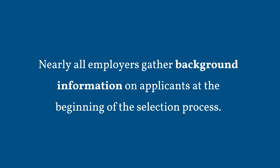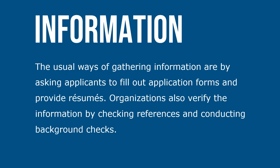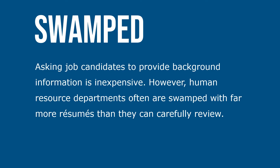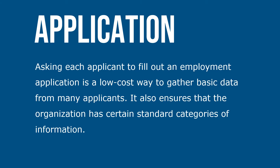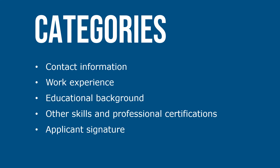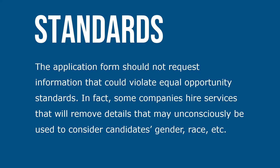Nearly all employers gather background information on applicants at the beginning of the selection process. The usual ways of gathering information are by asking applicants to fill out application forms and provide resumes. Organizations also verify the information by checking references and conducting background checks. Asking job candidates to provide background information is inexpensive; however, human resource departments are often swamped with far more resumes than they can carefully review. Some employers are alleviating this problem by using software to analyze contents and identify applicants who meet basic criteria for the position. Asking each applicant to fill out an employment application is a low-cost way to gather basic data, and it ensures that the organization has certain standard categories of information. These include contact information, work experience, educational background, other skills and professional certifications, and an applicant's signature.